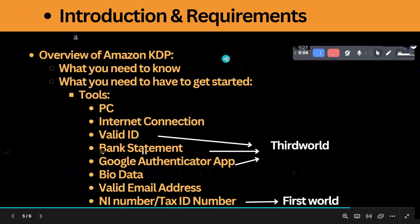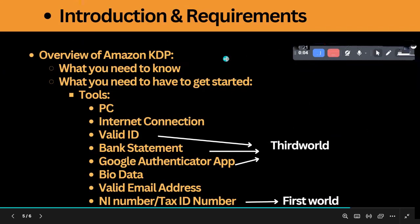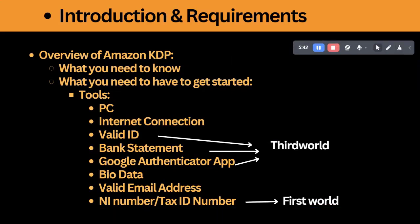Internet connection is of course a no-brainer. You also need a valid ID card. If you are a resident in a third-world country, you'll need a bank statement that is at most three months old, as well as the Google Authenticator app — you'll see why these are required due to the limitations that affect third-world country residents. Your bio data also needs to be handy: your full name, bank statement or means of ID, residential address, and phone number.